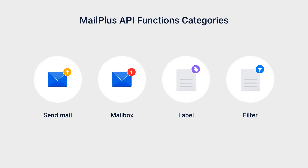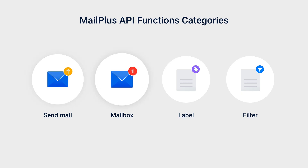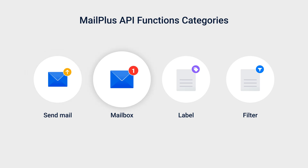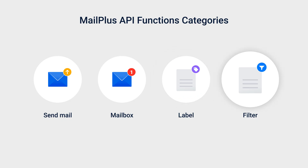The first step is to create a workflow for automation via API. MailPlus API functions fall into four categories: sending emails, configuring mailboxes, managing labels, and setting up filters. You can easily automate and streamline these key management tasks using the API.